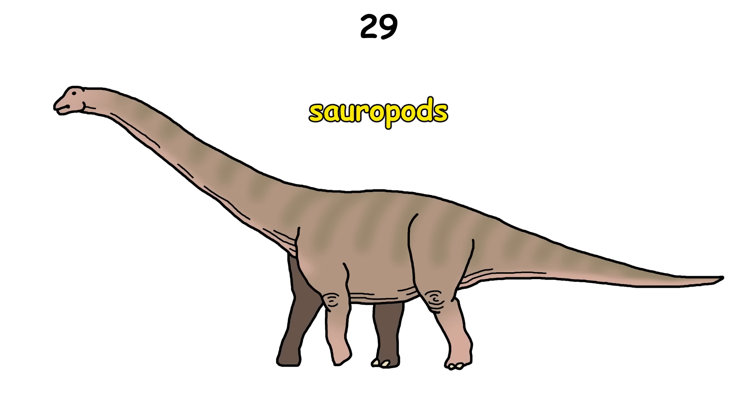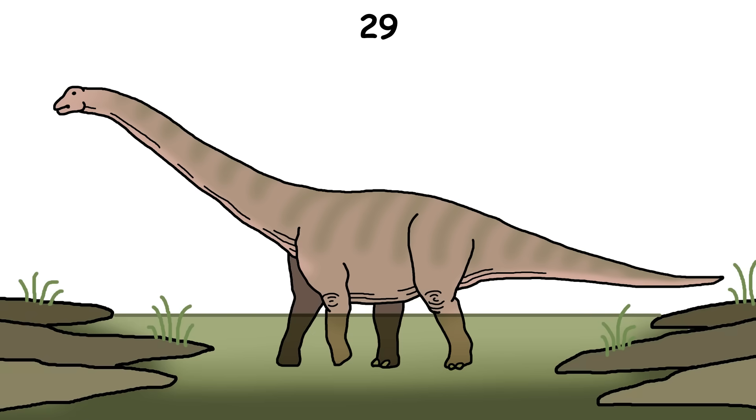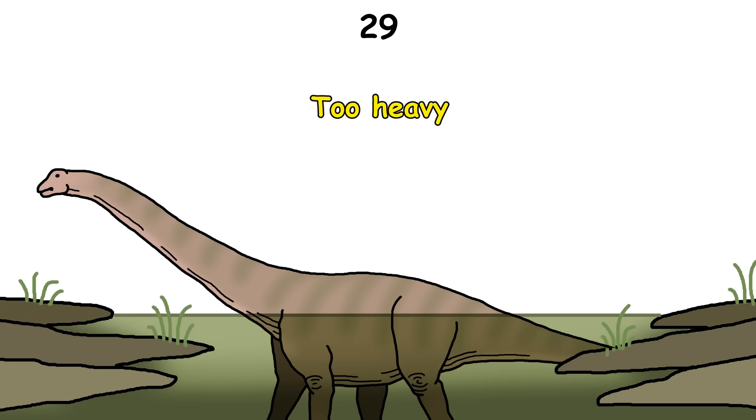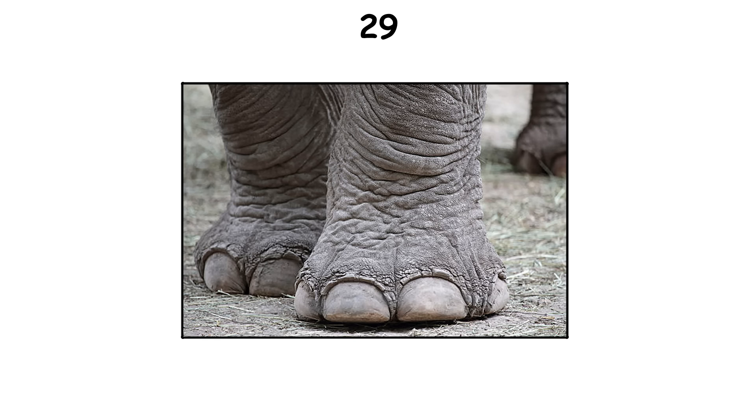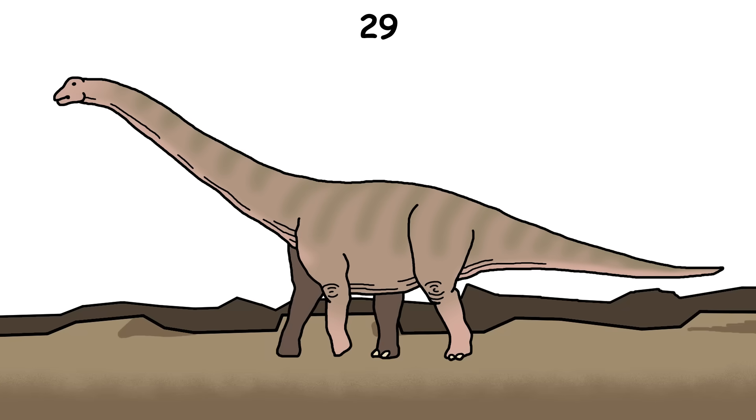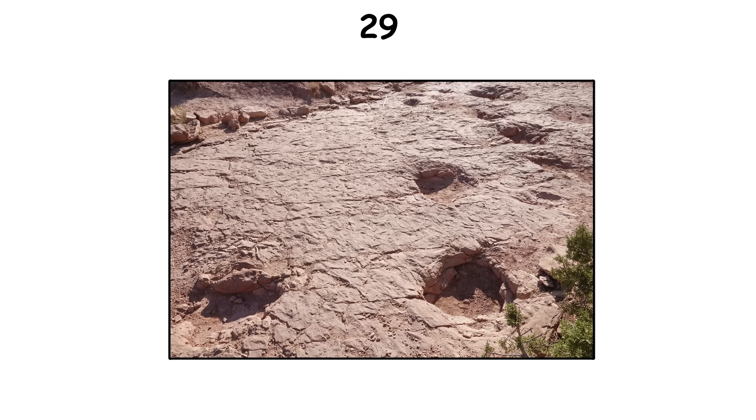Old illustrations often showed sauropods, the giant long-necked dinosaurs, living in swamps and lakes, believing they were too heavy to support their own weight on land. But this is incorrect. Their skeletons, with strong, pillar-like legs similar to an elephant's, were perfectly designed for life on land, and fossilized trackways also proved they walked on solid ground.